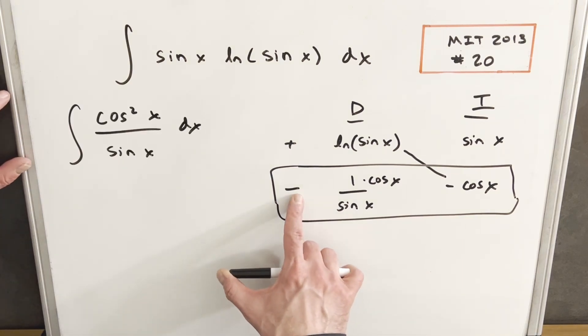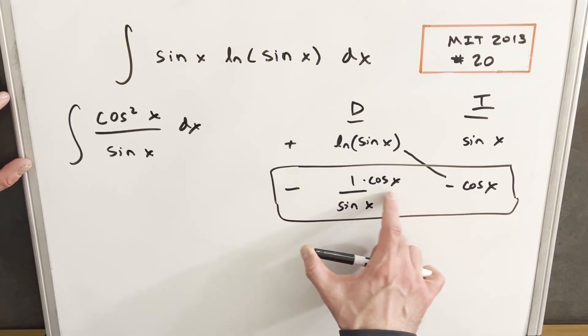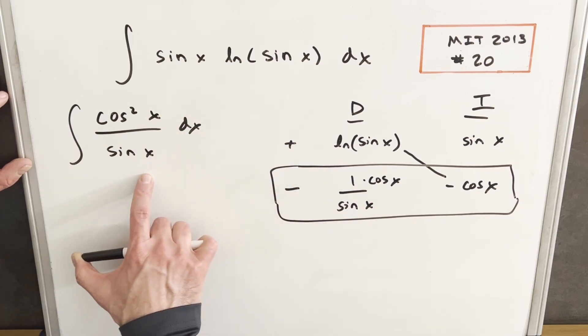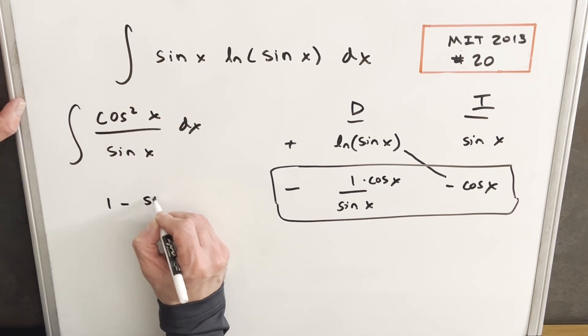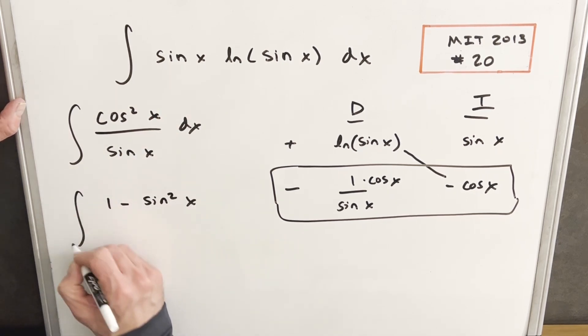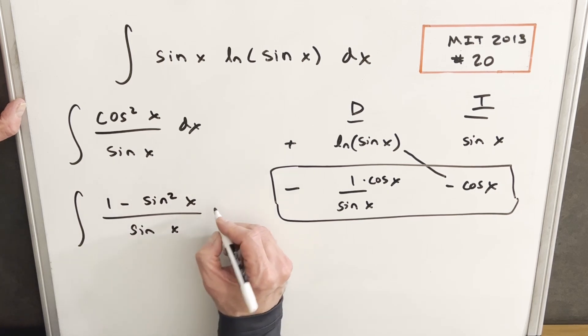Okay, so what I've done here is we just had the minus cancel. And cosine times cosine gives us our cosine squared over this sine x. Okay, then integrate this. I think I'm going to use the identity that cosine squared x is 1 minus sine squared x.